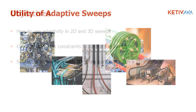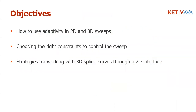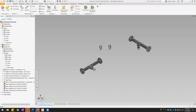Today we're going to take a look at three examples that will illustrate the fundamental concepts of using adaptivity in 2D and 3D sweeps. We'll look at controlling the sweep geometry as much or as little as needed, and also working with three-dimensional splines through the two-dimensional interface of your monitor and mouse. I'll show you some techniques for getting through that challenge, so without further ado let's switch over to Inventor.